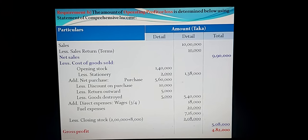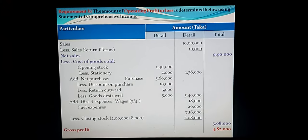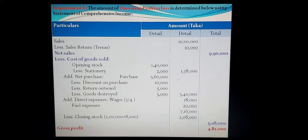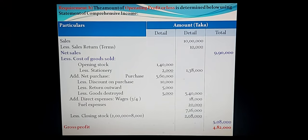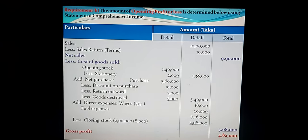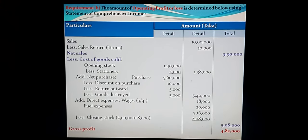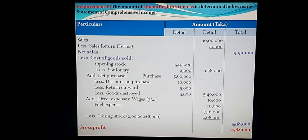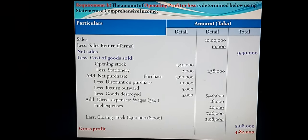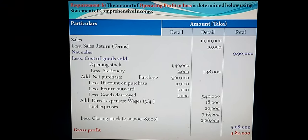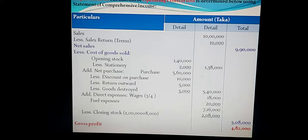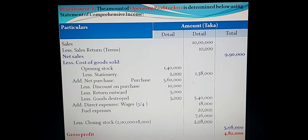The amount of operating profit or loss is determined using the statement of comprehensive income. Starting with sales: the amount of Taka 10 lakh 12,000 from the credit side. Less sales return — adjustment number two states that sales on return basis of Taka 10,000 are to be deducted from sales and from accounts receivable. Net sales: Taka 9 lakh 90,000 in the outer column.